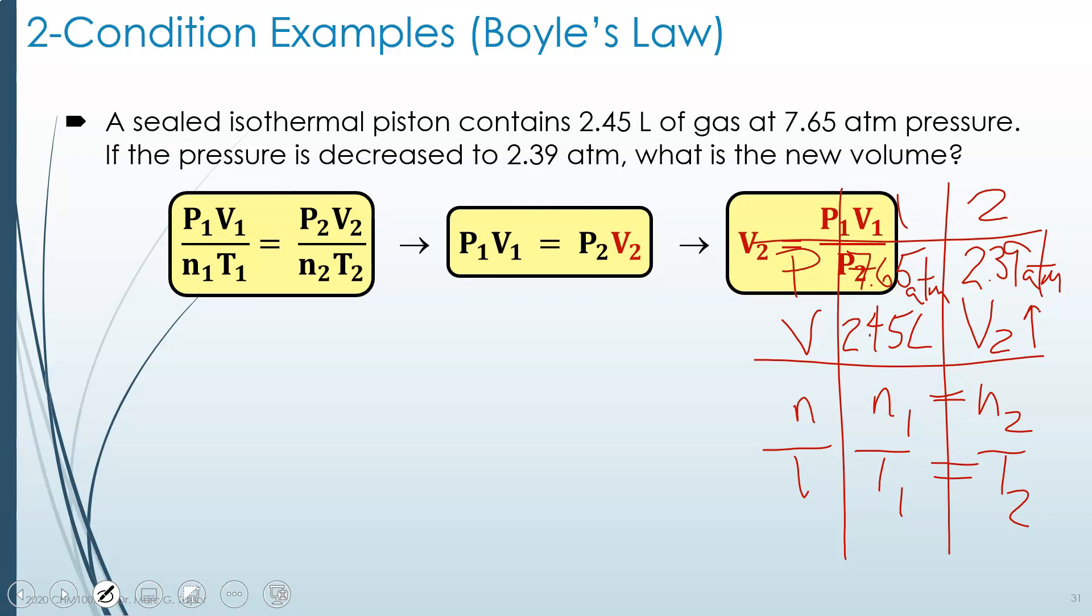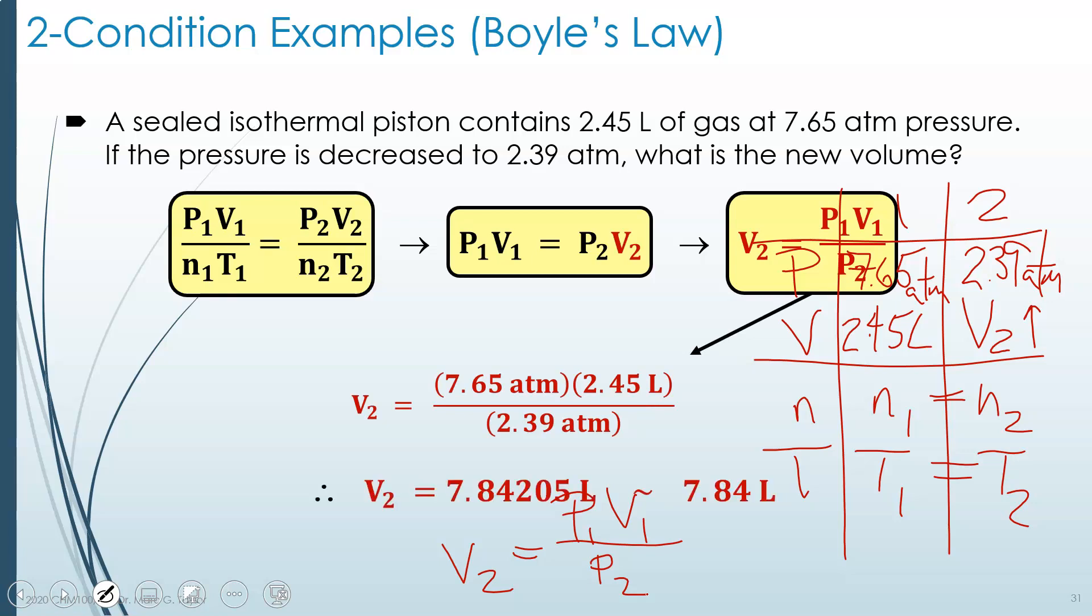I apologize for having this overlap. But I'll write it down at the bottom here: V2 equals P1V1 over P2. And at this point, we can plug in our various numbers. And what we get is an answer.